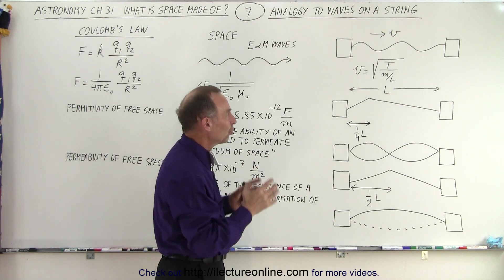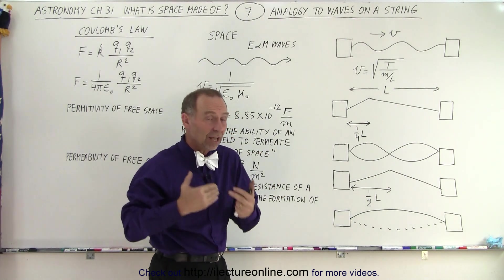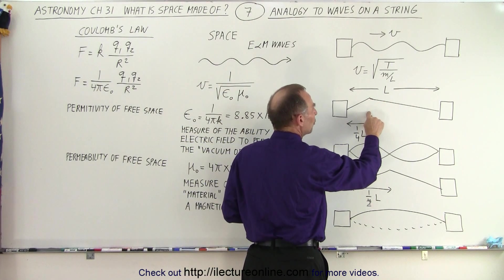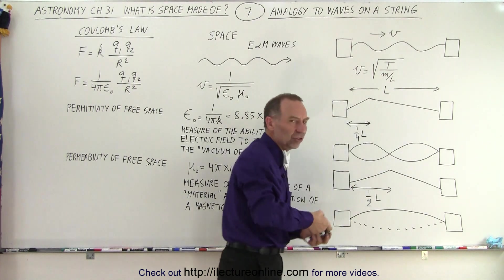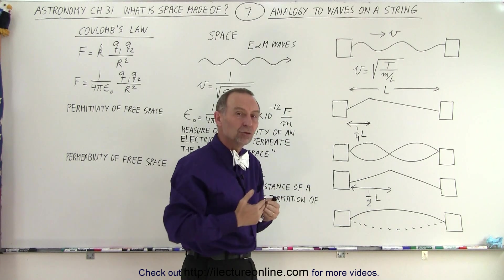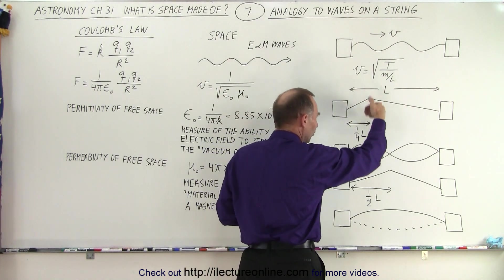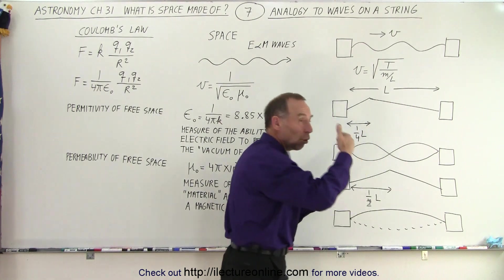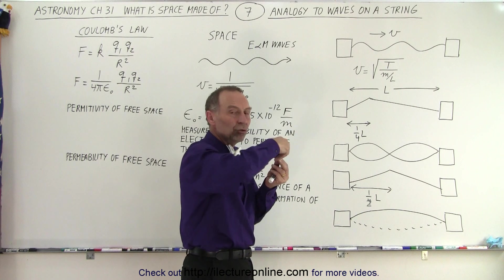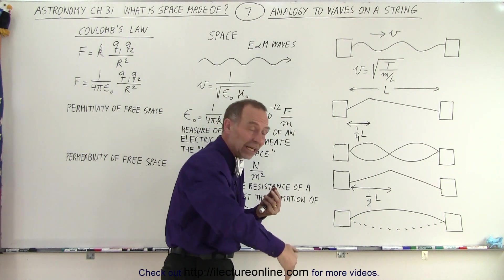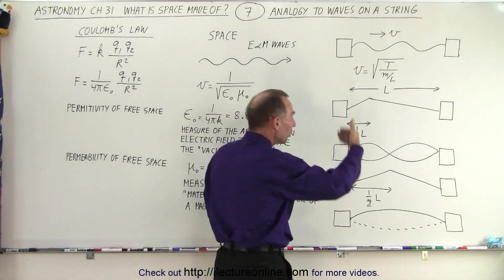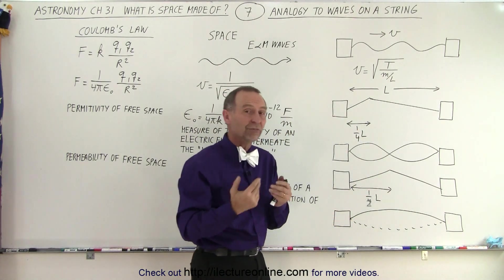Now if we have a situation where the tension is set and therefore the velocity of the wave is set, and then we pluck on the string, we're adding potential energy by stretching the string. The tension on the string causes it to snap back into position, but it will overshoot its equilibrium point. So the energy that was put into the string, the potential energy, then converts to kinetic energy back to potential energy back to kinetic, and it causes a wave of a specific wavelength and a specific frequency.